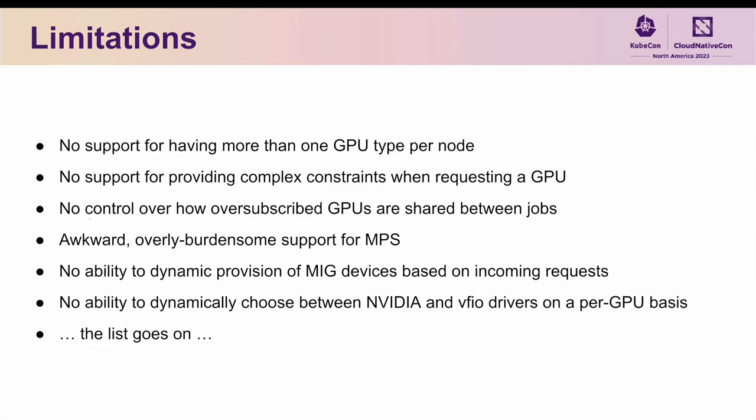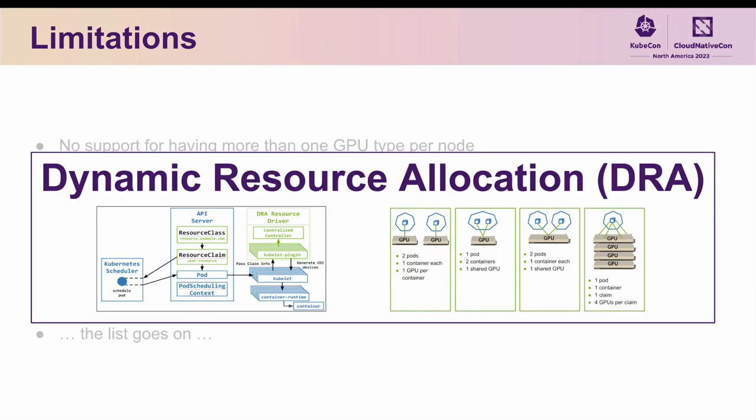And as you can imagine, the list of limitations goes on. But this is where dynamic resource allocation comes in. In addition to supporting all of the existing use cases covered by the GPU support we have in Kubernetes today, our DRA resource driver for GPUs addresses all of the limitations mentioned as well. And the rest of this talk is dedicated to showing exactly how this is done.